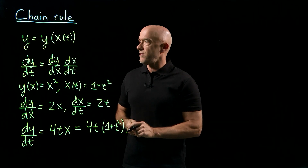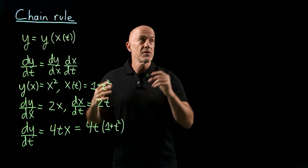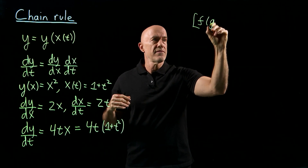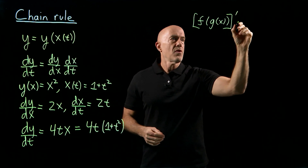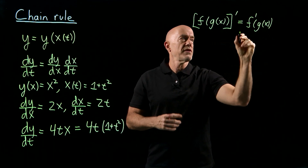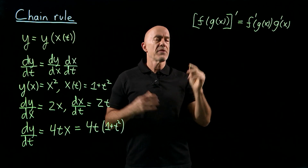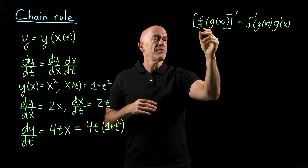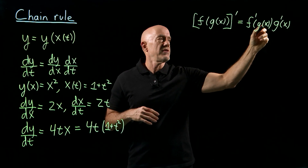Sometimes the Leibniz notation is quite useful, but the main way we differentiate the composition of two functions is using the formula: if we take the derivative of f of g of x — a composition of f and g — what we do is take the derivative of the outside, f prime of g of x, times the derivative of the inside, g prime of x. We remember this as: the derivative of the outside of a function of the inside equals the derivative of the outside times the derivative of the inside.